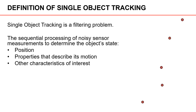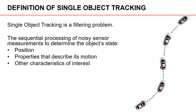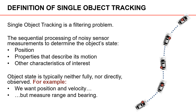We have measurements that are illustrated by these red circles, and we are interested in processing these measurements to estimate the state of the object, which in this case is a car. A complicating aspect of the filtering problem is that the object's state is typically neither fully nor directly observed. For example, if we use a radar that gives us measurements of the range and bearing to the object, we cannot observe the full state, since a single range-bearing measurement is related to the position, not to the velocity. In addition, we can't observe the position directly — we have to calculate it based on the range and the bearing, and we have to calculate the velocity by processing a sequence of measurements.